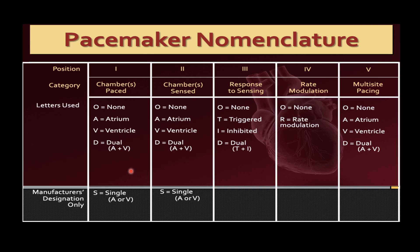A temporary pacemaker uses three letters, while a permanent pacemaker uses five letters. For the first position — chamber paced — O means none, A means atrium, V means ventricle, D means dual (atrium and ventricle). The second position — chamber sensed — O for none, A for atrium, V for ventricle, D for dual. The third position — response to sensing — O for none, T for triggered, I for inhibition, D for dual (trigger plus inhibition).